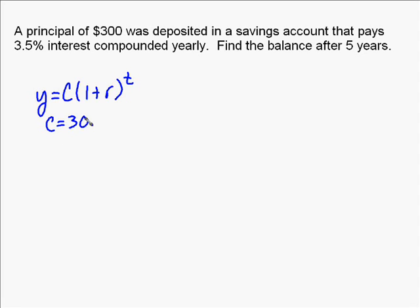A principle of $300 was deposited in a savings account. Well, the way the growth formula works is that c is how much you start with. Whatever you're working on, whatever you're starting with, that's what the c is.